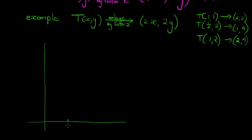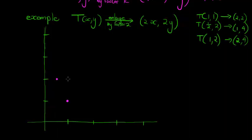Let me draw the figure. I'll mark 1, 2, 3, 4 on the axes. The first coordinate of the original triangle is (1,1) — there it is. Then (½, 2) and (1, 2). Those three coordinates make a triangle. There's the original triangle.